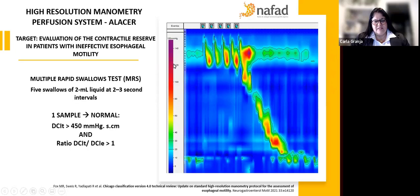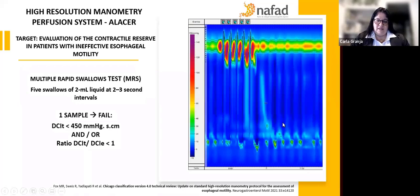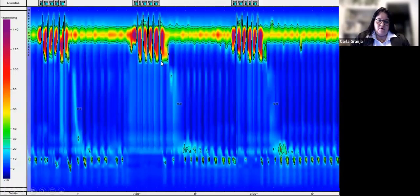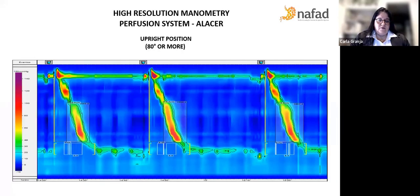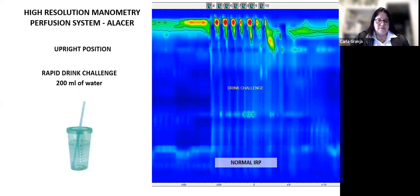This is the image of a positive test when we just do one sample. And when we have this image with a failed test, we realize a minimum of three samples of the test to do a report that there is an absence of contractile reserve. Then we repeat all the phases in the upright position, the deep inspirations, the rest pressure. And this is the image of the upright position, the wet swallows. And then we finally perform the rapid drink challenge with 200 ml of water. This is the image of a normal IRP.